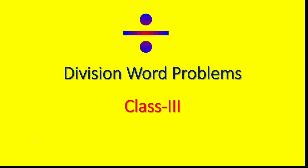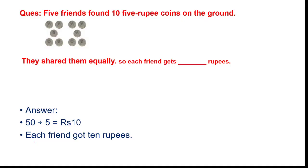Welcome children. Today I am going to explain word problems based on division. Let's start. Here is your question: five friends found ten five-rupee coins on the ground. They shared them equally. So each friend gets how many rupees?